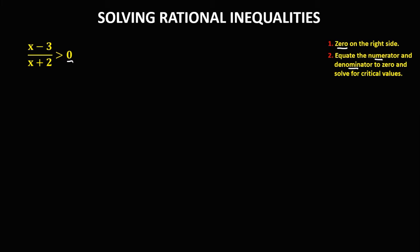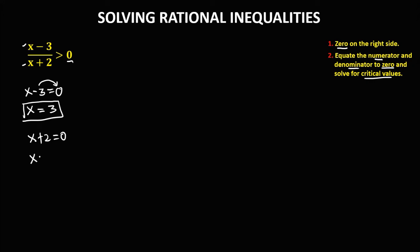We solve for the critical values. For the numerator, x minus 3 equals zero, so x equals positive 3. For the denominator, x plus 2 equals zero, so x equals negative 2. These are the two critical values.